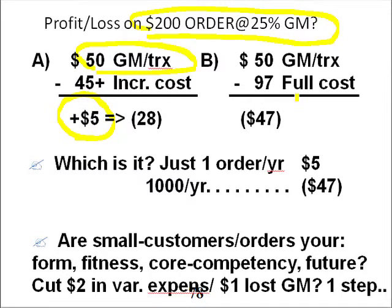However, if we have assigned the full average cost, we would lose $47. Which is it?